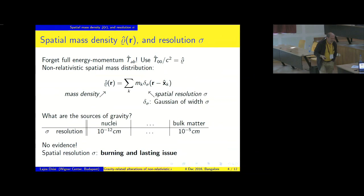Now, we need to introduce the key quantity for Newtonian gravity, quantized or unquantized. And that's the spatial mass density, rho of r, and the spatial resolution sigma. So, as I suggested, let's forget full energy momentum T_AB and use only its upper left corner, T_00 over c squared.